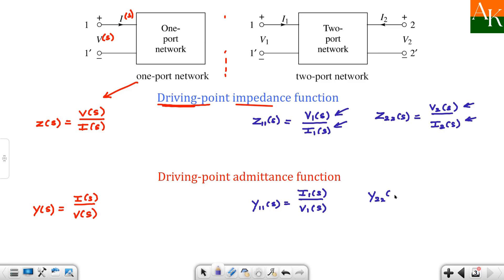And here will be y two two of s, and y two two of s is defined as i two of s by v two of s. So these four driving point functions are possible for two port network, of which two are your driving point impedance functions and the remaining two are nothing but driving point admittance functions.